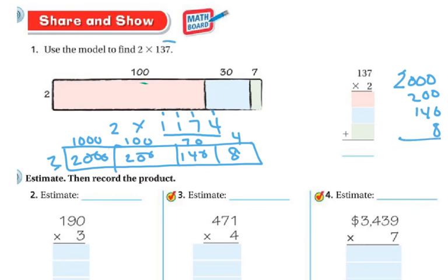Now granted, this one was only 3 digits, and that's why it's broken up into 3 parts. If it were a 5-digit number, I'd break it up into 5 parts. I just wanted to show you that. So if this bar model or this model works for you, I wanted it to be applicable to other numbers.